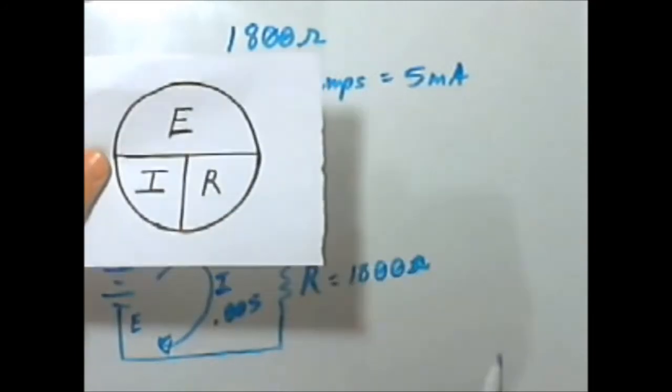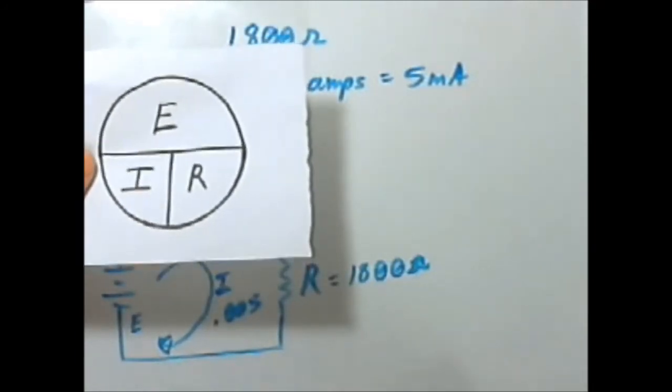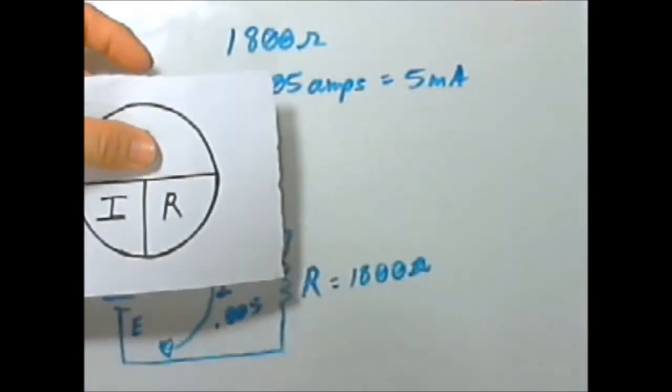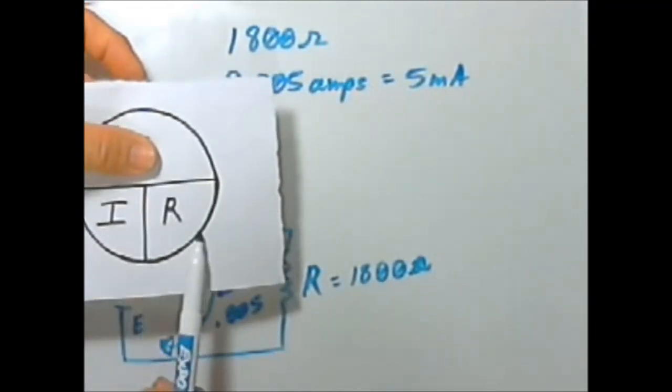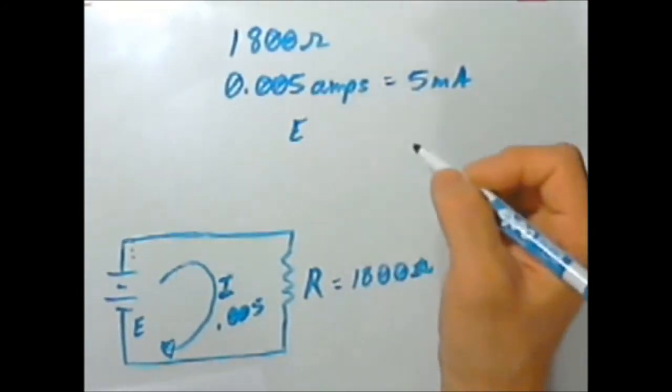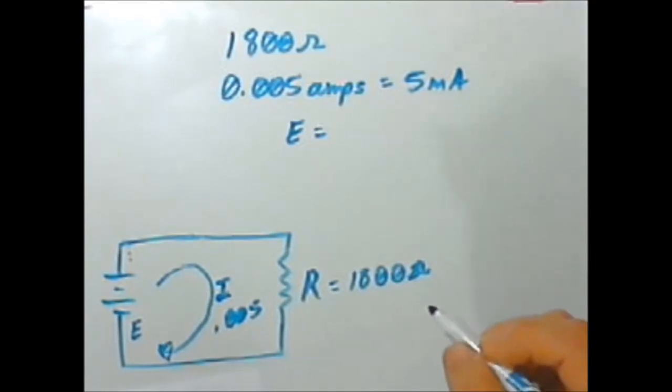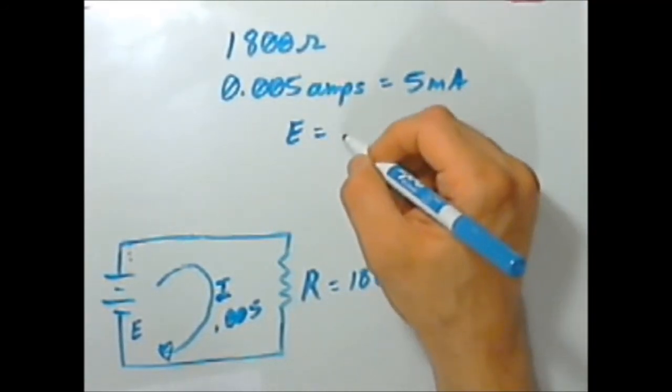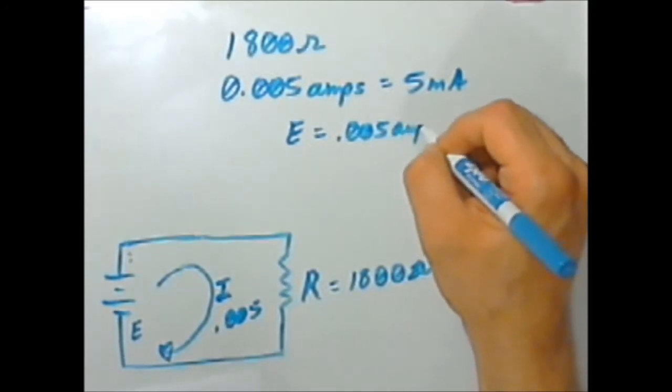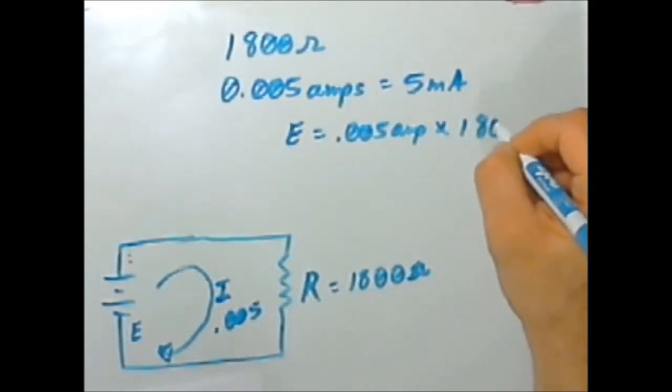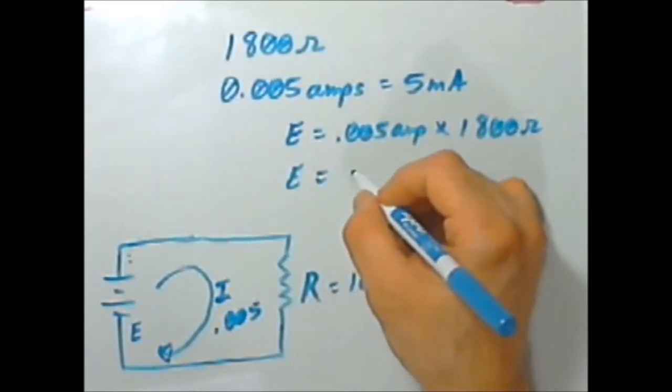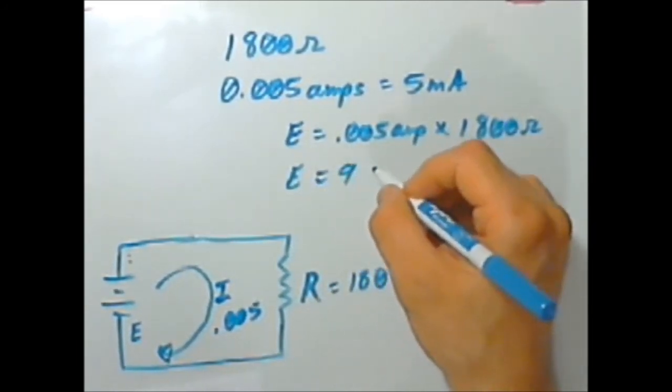So let's look at that. Looking at our Ohm's Pi again, we know our resistance, we know our amps. So we want to solve for voltage and we're going to do that by multiplying them. So our voltage or our E for electromotive force is equal to I, which is 0.005 amp times 1800 ohms. And solving that we get E or the voltage equals nine volts.